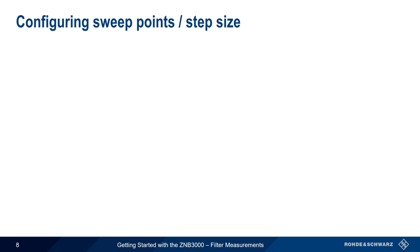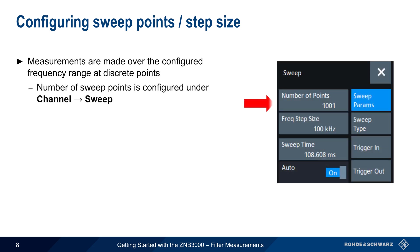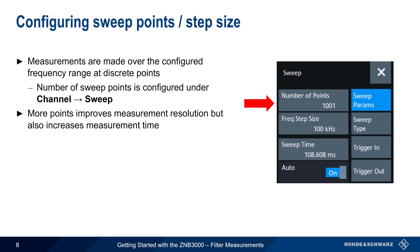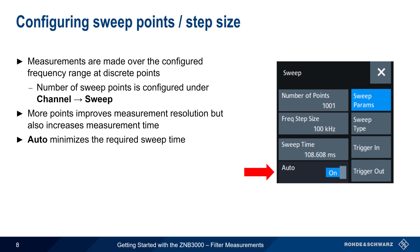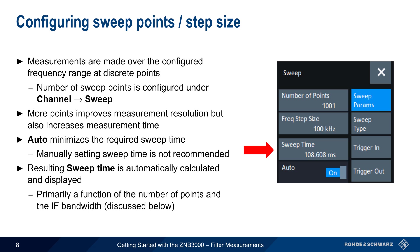Another important parameter is the number of sweep points. VNAs make measurements at discrete points over the defined frequency range or span, and the number of sweep points is configured by going to Channel and then Sweep. Increasing the number of points will generally increase the resolution of the measurement, but will also increase the measurement time. By leaving the Auto switch enabled, the ZMB3000 will minimize the required total sweep time. Manually setting sweep time is possible but is not recommended. The total time for one sweep is automatically calculated and displayed, and this is primarily a function of the number of sweep points but also of the IF bandwidth.